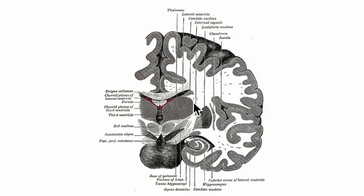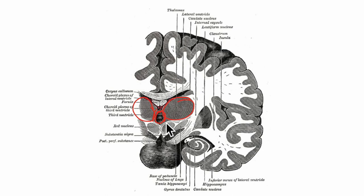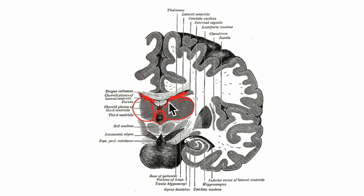Now let's learn about the thalamus in detail. The thalamus, as you can see in this diagram, is a large mass of grey matter situated in the lateral wall of the third ventricle. Here you can see the third ventricle and on its lateral wall you can see the presence of the thalamus. Similarly, it is situated in the floor of the central part of the lateral ventricle, as shown here.